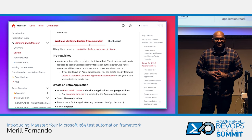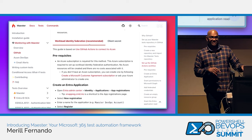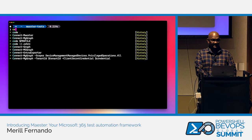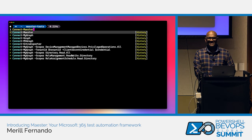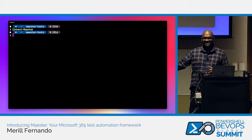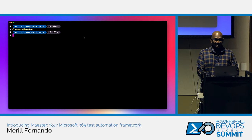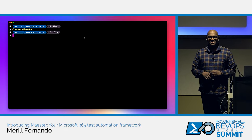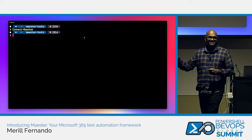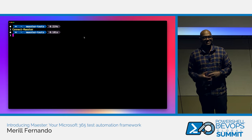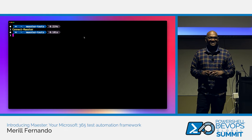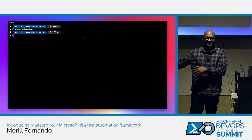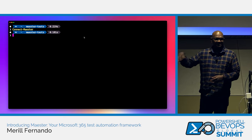You can run Maester from the command line without any CI/CD setup. You run 'Connect-Maester', which calls Connect-MgGraph with all the required scopes. The global admin needs to consent to those permission scopes initially. You can run it from the command line, be happy with the report, and stop there — but the better approach is to set up the automation and have it running daily.